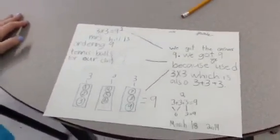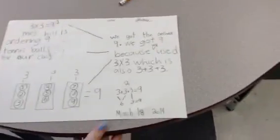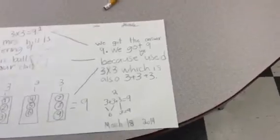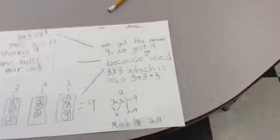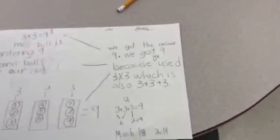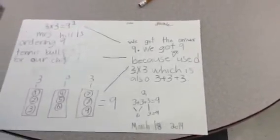Mr. Hill is ordering 9 tennis balls for our class. We got the answer 9. We got 9 because we used 3 times 3, which is also 3 plus 3 plus 3.